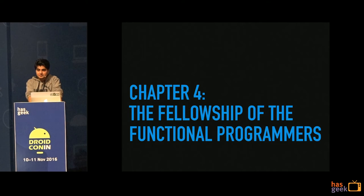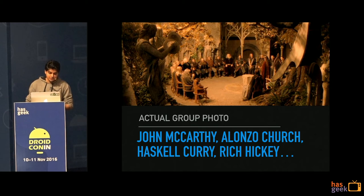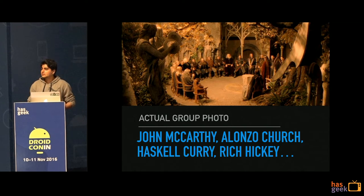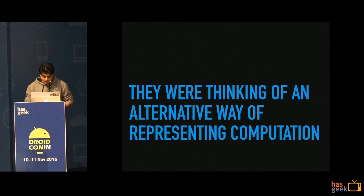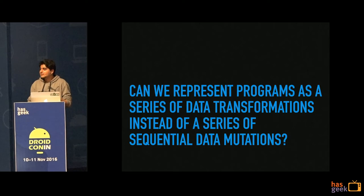Chapter 4: The Fellowship of the Functional Programmer. There's John McCarthy, Alonzo Church who invented Lambda Calculus — one of the foundations of functional programming — and Haskell Curry (anyone heard of Haskell? It's a language nobody understands). The founder of Clojure is also here. What these guys were doing is thinking of an alternative way of representing computation. The question they were trying to answer: can we represent programs as a series of data transformations instead of a series of sequential data mutations?